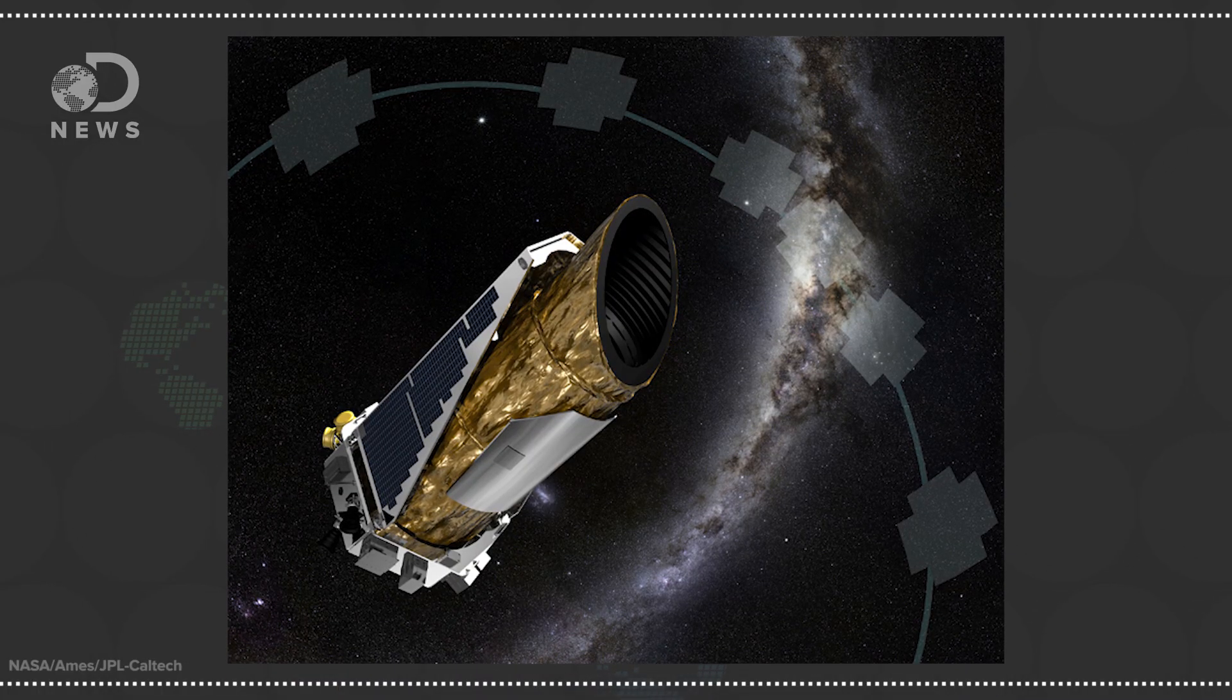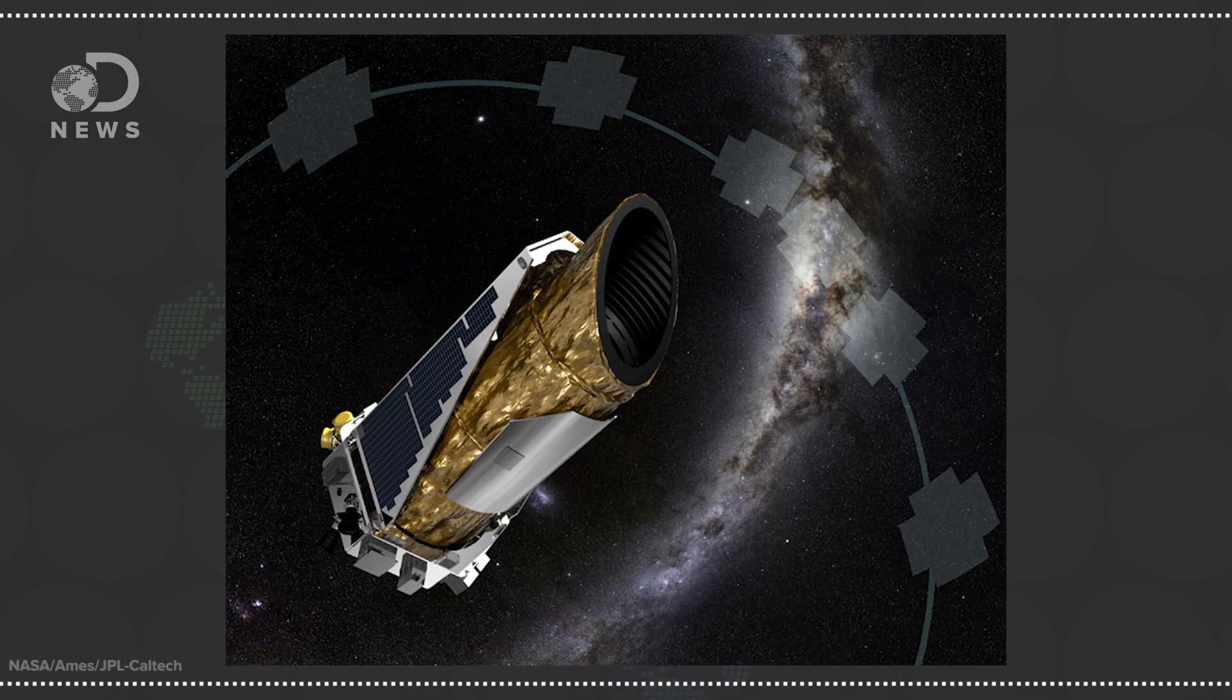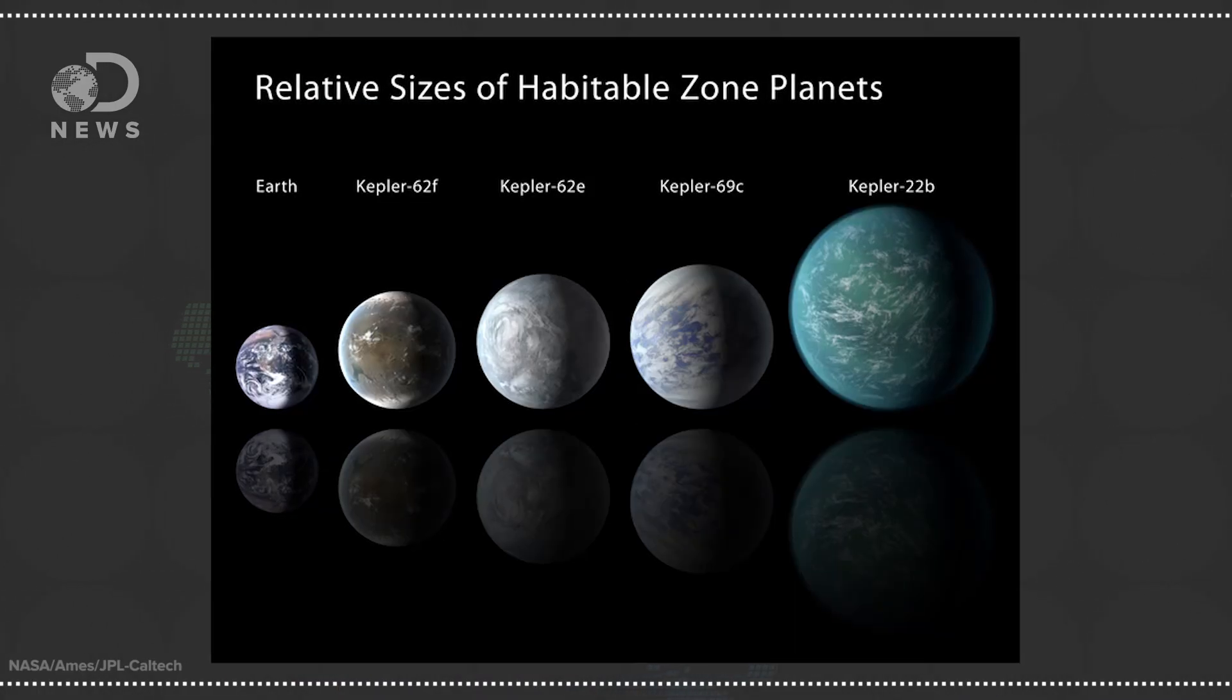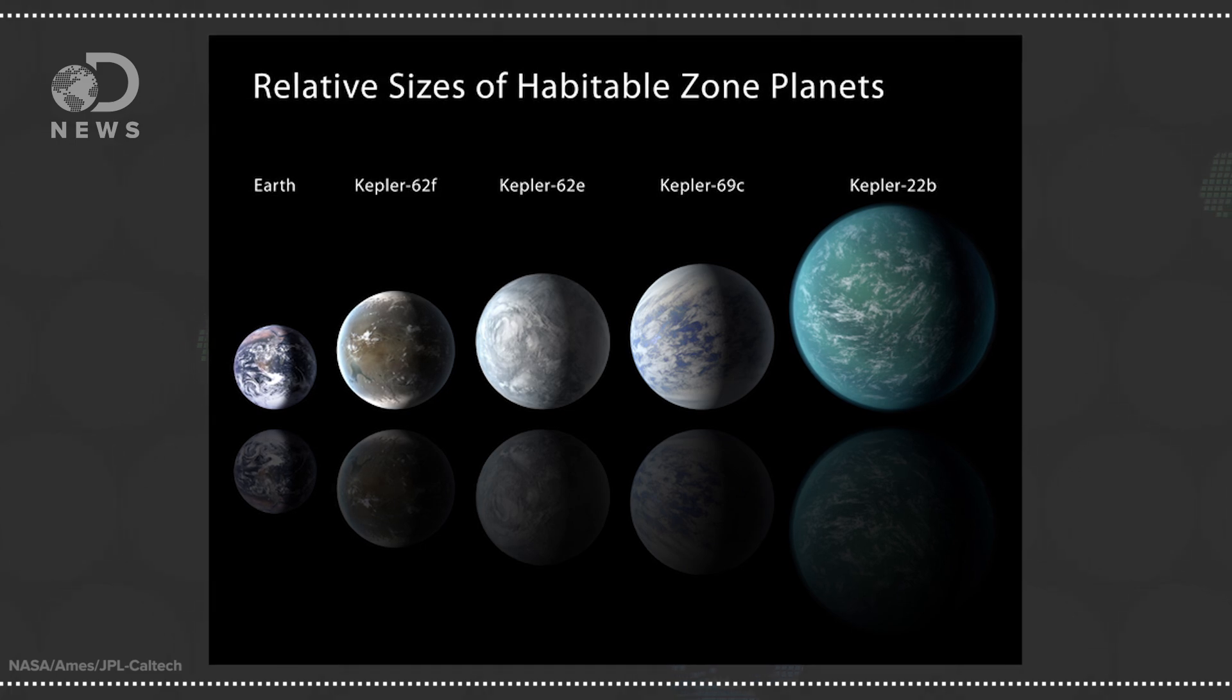The Kepler telescope was launched in 2009 to search for exoplanets. And in case you've forgotten, Kepler is broken and is still out there finding them. The Milky Way has between 100 and 400 billion stars. That's a lot of places we could point a telescope.